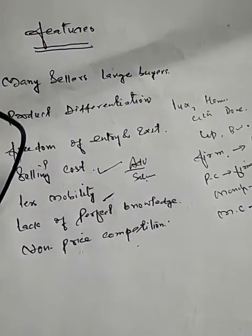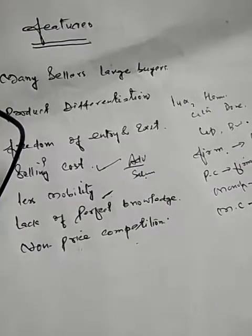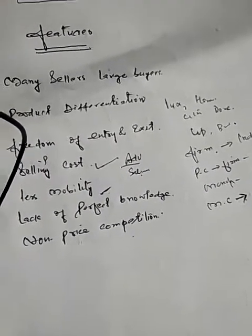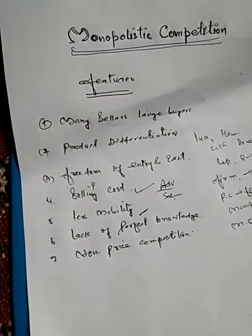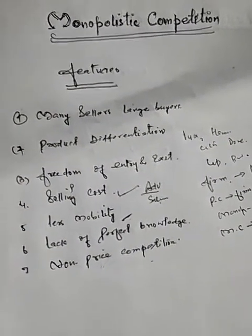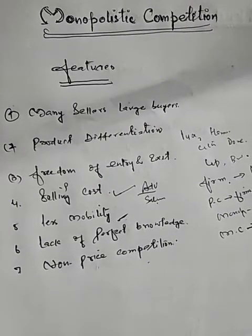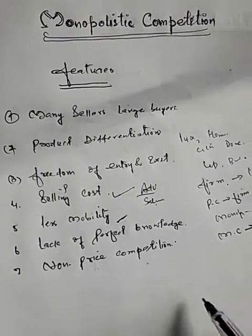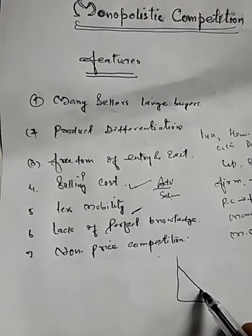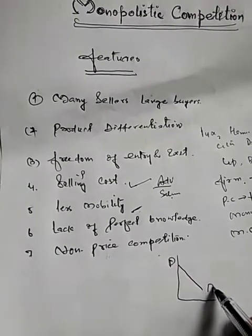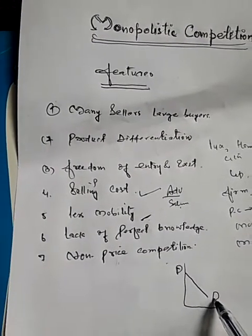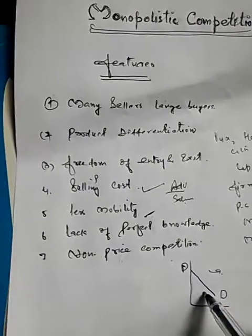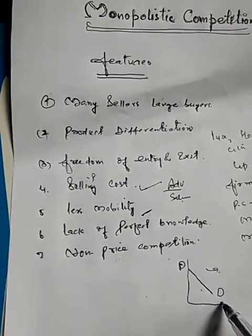Under monopolistic competition, a firm can sell more of its product only by lowering the price. Similar to a monopoly, the firm has some control over price and can sell more only by lowering it — the relationship is the same. So the demand curve of a firm under monopolistic competition is downward sloping. The difference between the demand curve of a monopoly firm and a monopolistic competition firm will be discussed in the next lecture.